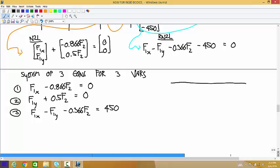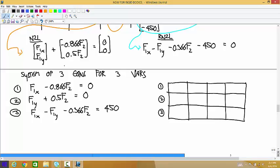And you can solve that using reduced row echelon form. So here's equation one, equation two, equation three. This is F1,X, F1,Y, F2, and then this is the constant. So equation one says F1,X, we have one of those. F2, we have negative 0.866 of those. And the other two are zeros. F1,Y for the second equation, we have one of those. F2, we have positive 0.5 of those. And the other two are zeros. And then our third equation, F1,X, we have one. F1,Y, we have negative one. F2, we have negative 0.366. And the constant, we have 450.